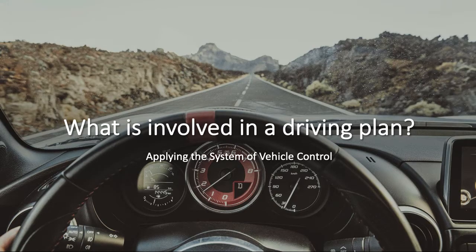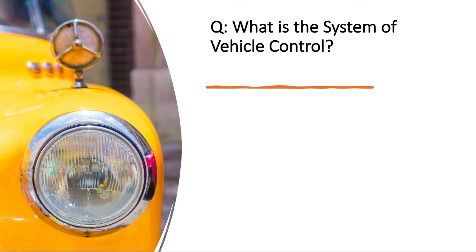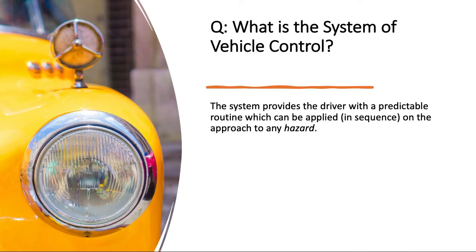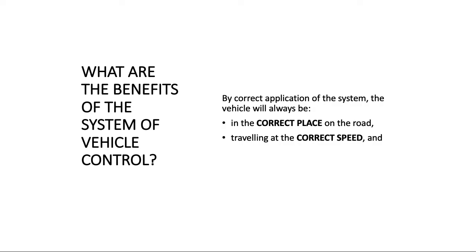Applying the system of vehicle control. The system provides the driver with a predictable routine which can be applied in sequence on the approach to any hazard. By correct application, the vehicle will always be in the correct place on the road, travelling at the correct speed and with the correct gear engaged.